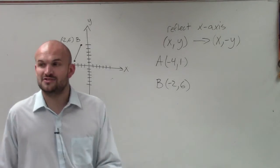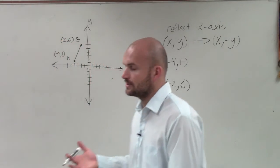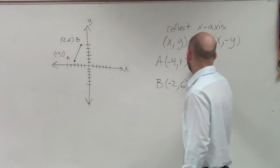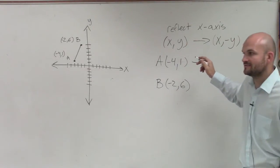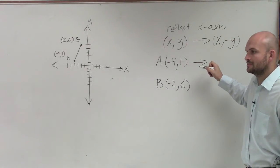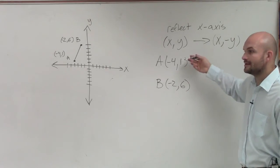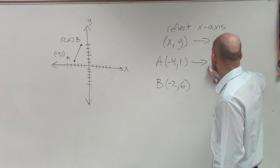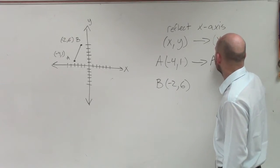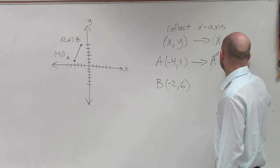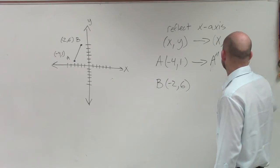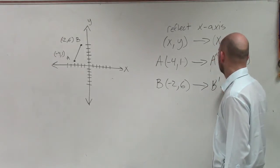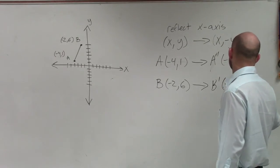So if I want to apply the transformations of reflecting over the x-axis, all I have to do now is make what negative, Dominic? The y, right? Just make the y-coordinate the opposite sign. So therefore, it's A prime is negative 4 comma negative 1. Here, this is B prime, which is negative 2 comma negative 6.